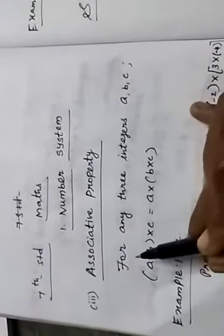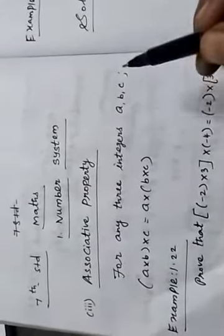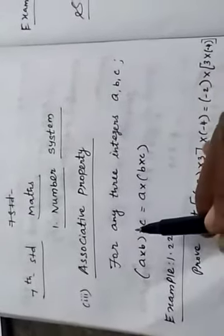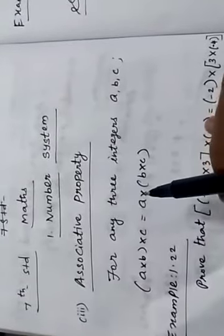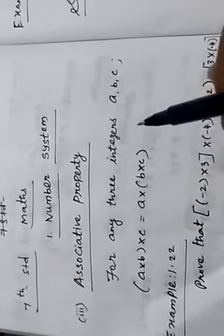The definition: for any three integers a, b, c — a into (b into c) is equal to (a into b) into c.